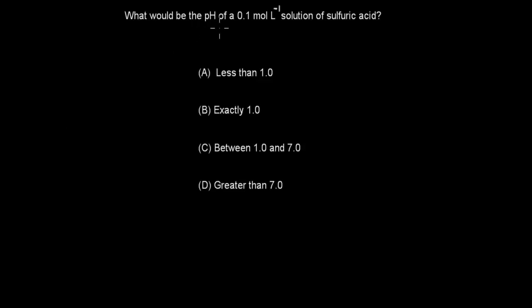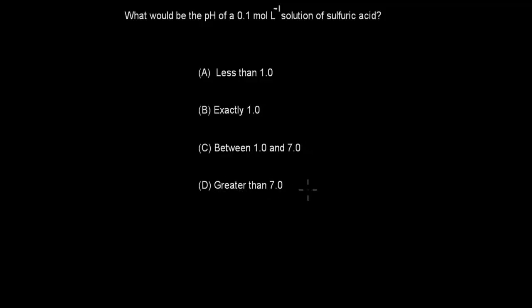Next question: What would be the pH of a 0.1 mole per liter solution of sulfuric acid? A) less than 1.0, B) exactly 1.0, C) between 1.0 and 7.0, D) greater than 7.0. Pause the video and attempt the question.